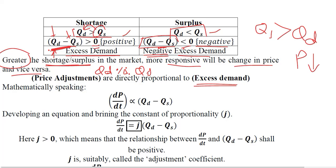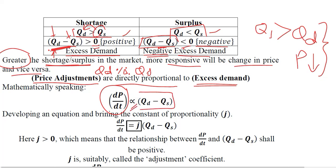This can be expressed in terms of direct proportionality: the price adjustments are directly proportional to excess demand. After mathematizing it, we know that a constant of proportionality is introduced whenever we remove the proportionality sign. We have introduced the constant of proportionality, which is J in this case, and after introducing it we now have an equation instead of a proportionality.